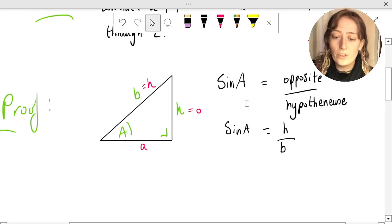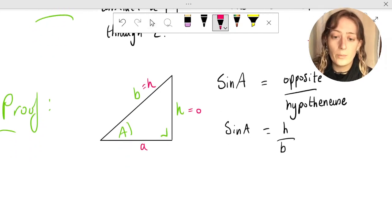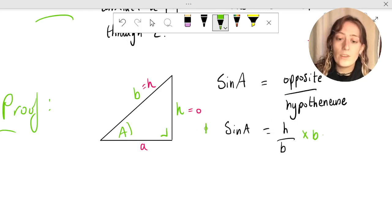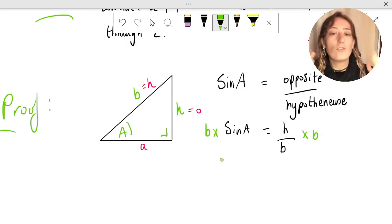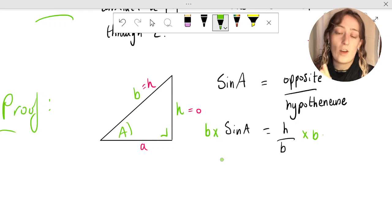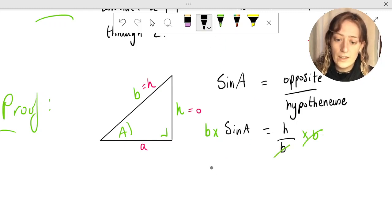Now the next thing I'm going to do, just to simplify things down a little bit, I'm actually going to multiply both sides by b here. By doing that I don't change anything in the equation. If you do something to one side, as long as you do to the other, it still holds. So it's perfectly fine to multiply both sides by b. My b's are going to cancel, and finally I end up with b sine a equals h.